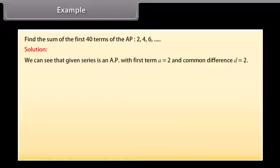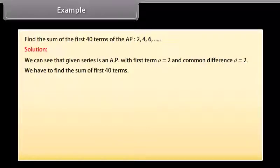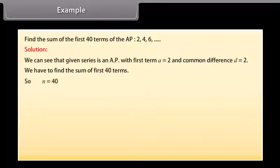We can see that the given series is an AP with first term A equal to 2 and common difference D equal to 2. We have to find the sum of the first 40 terms, so N is equal to 40.